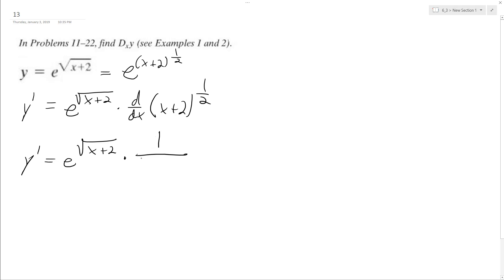the exponent here, which is one-half, and then we subtract 1 from that, so we get x plus 2 raised to the negative one-half, which is square root of x plus 2 on the bottom here